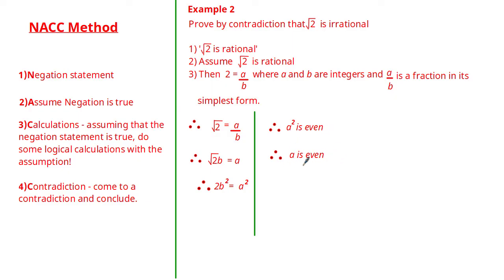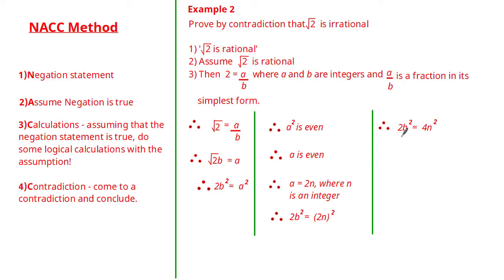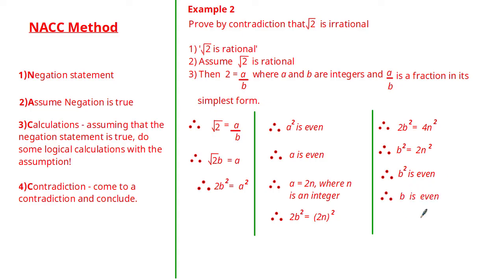So we can write a = 2n where n is an integer. Substituting into the equation 2b² = a² gives 2b² = (2n)², and expanding the right-hand side: 2b² = 4n². Dividing both sides by 2 gives b² = 2n². This tells us b² equals 2 times an integer, meaning b² is also even, and therefore b is even.